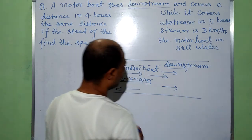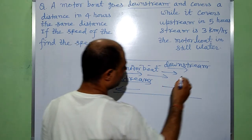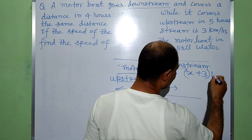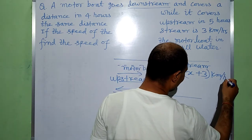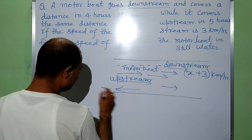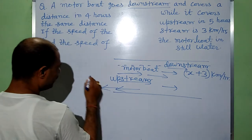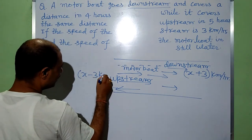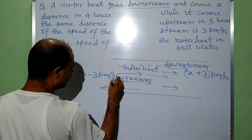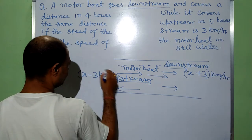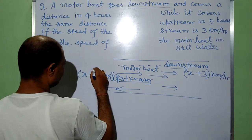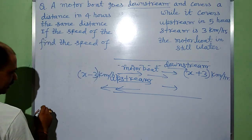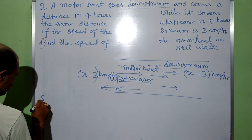In this way, the speed of the motorboat going downstream will be X plus 3 km per hour, whereas going upstream the speed of the motorboat will be X minus 3 km per hour. The solution will be done like this.